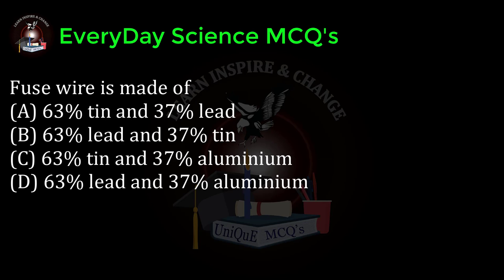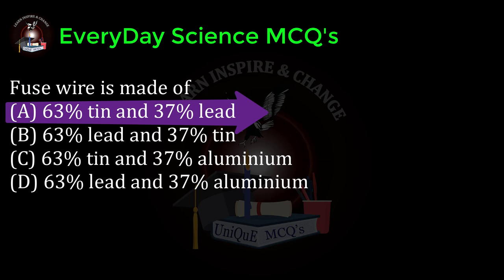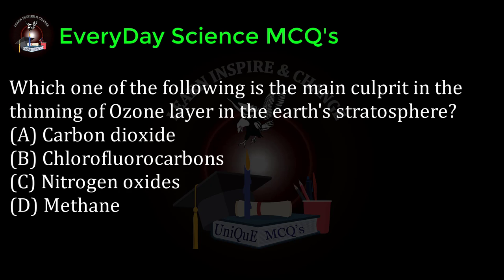Fuse wire is made of: a) 63% tin and 37% lead, b) 63% lead and 37% tin, c) 63% tin and 37% aluminium, d) 63% lead and 37% aluminium. Correct answer: a.